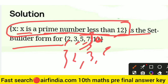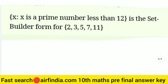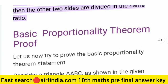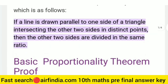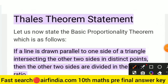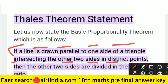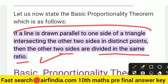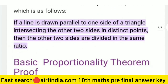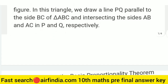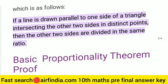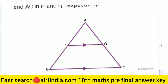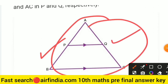The next question: state Thales' theorem. Remember you are only asked to state the theorem, not prove it. The statement is: if a line is drawn parallel to one side of a triangle intersecting the other two sides in distinct points, then the other two sides are divided in the same ratio. This is the full statement. The proof is a very long answer, but here only the statement is needed. Make sure to draw a diagram.